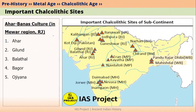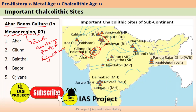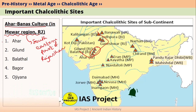First, let us look at the location of Ahar's culture. Ahar's culture is located in the Mewad region of Rajasthan, specifically in the south-eastern part of Rajasthan. Some of the important Chalcolithic sites in Ahar's culture are Ahar, Gilund, Balathal, Bagod, and Ojiyana.